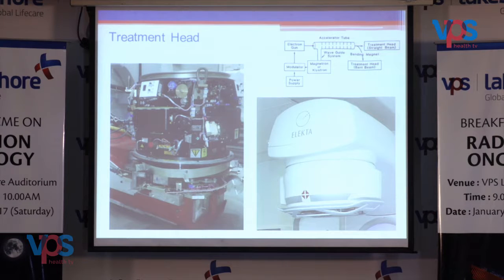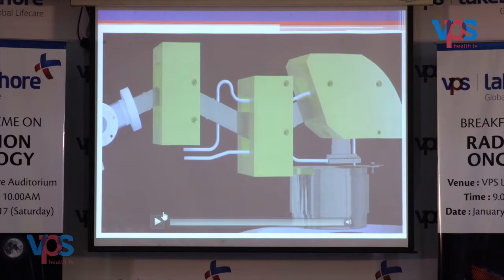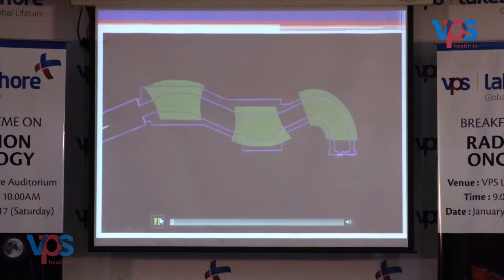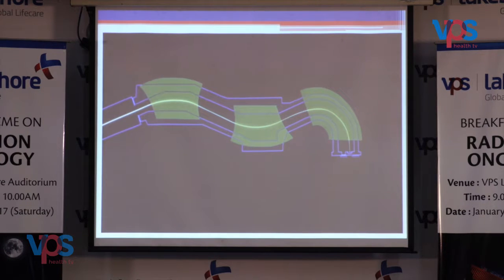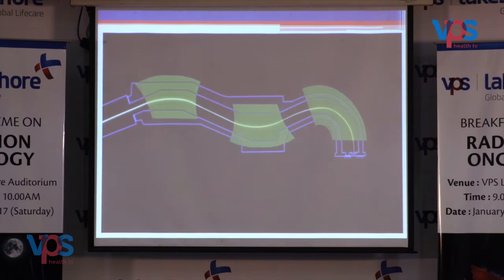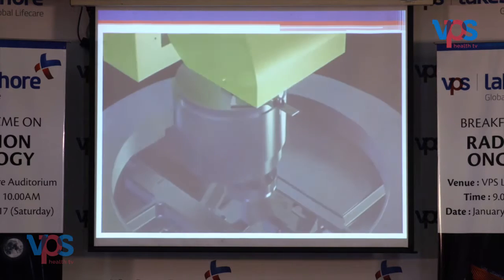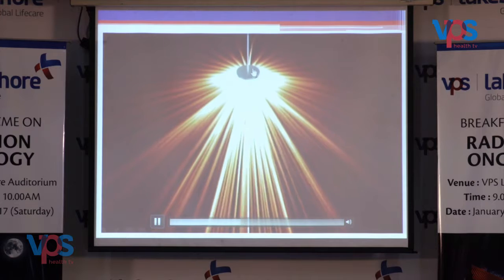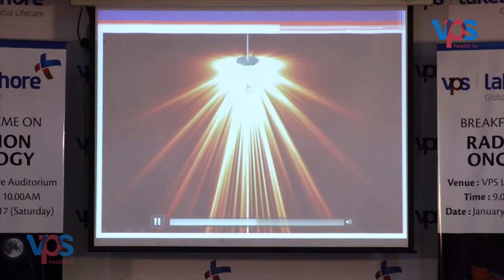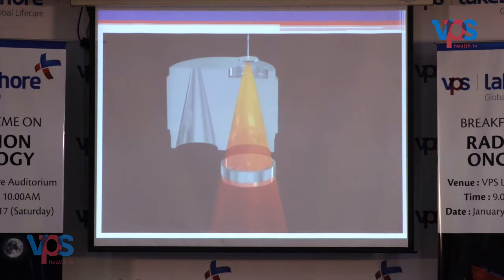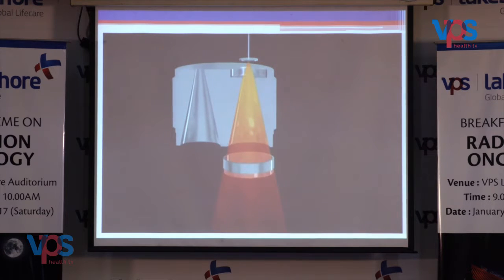This is the treatment head, which contains several components. There is a bending magnet tube inside the treatment head — it does two things: it directs the electron beam towards the target and focuses the electron beam to a pinpoint. The electron is then allowed to hit a heavy metal target, and high-energy X-ray photons are produced in a radial direction. Only forward-scattered high-energy X-rays are allowed to treat the patient.